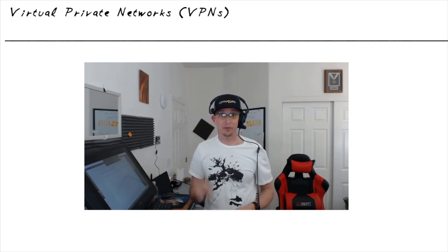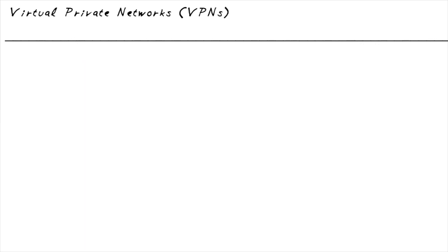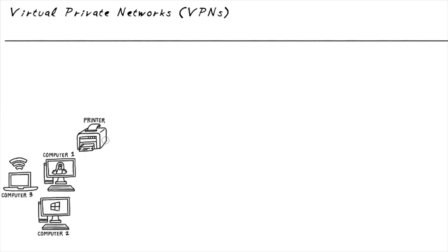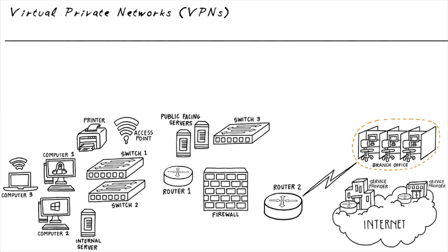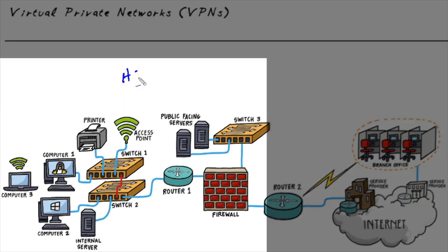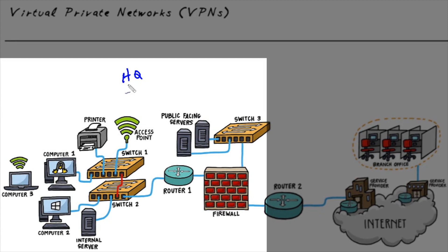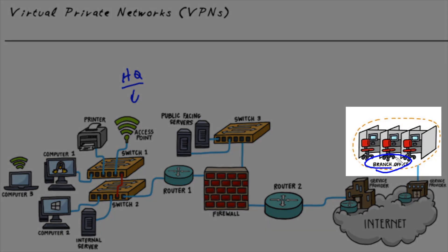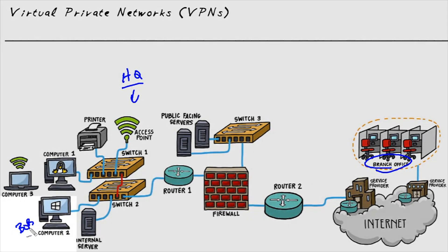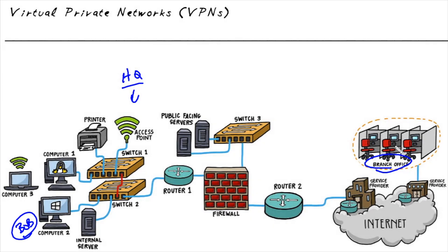We're going to use this network topology as a backdrop for our conversation regarding virtual private networks. Let's imagine this site on the left is the headquarter site, and over here we have the branch office, with Bob at the headquarter site. To get connectivity between the branch office and the headquarter site, they are leveraging the internet for connectivity.